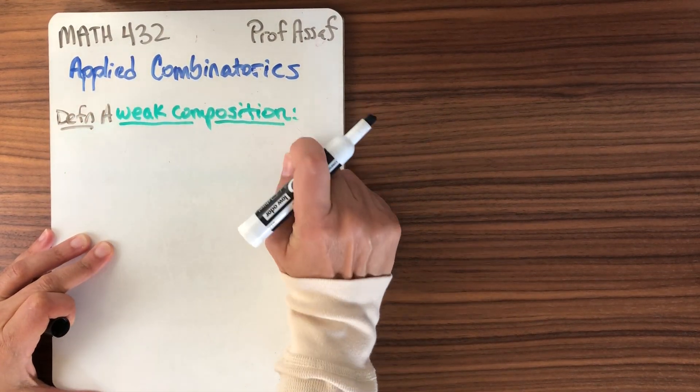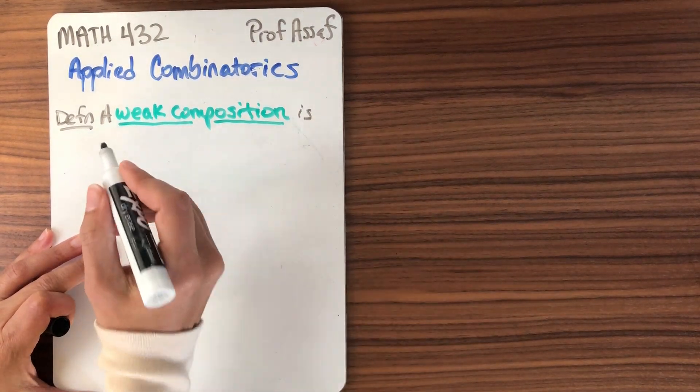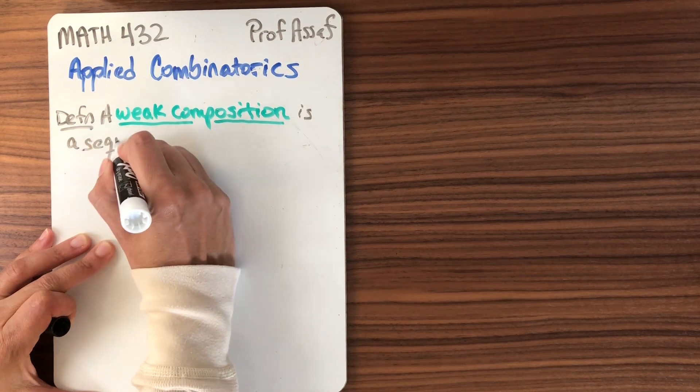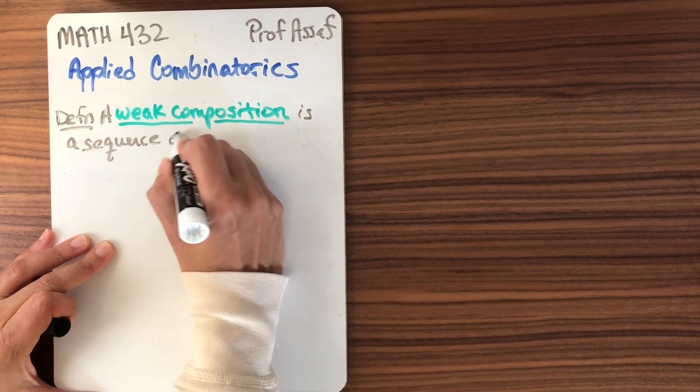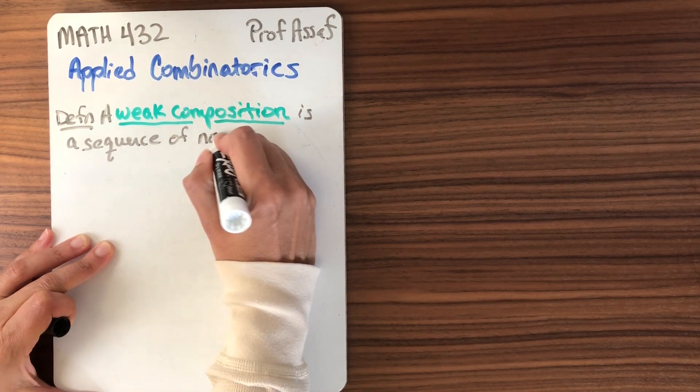A weak composition is just a sequence of non-negative integers. That's it. We think about the structure of it in a certain way, but let's write this down first. A sequence of non-negative integers.